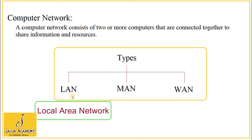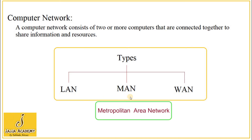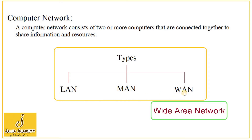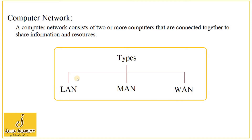LAN stands for Local Area Network, MAN stands for Metropolitan Area Network, and WAN stands for Wide Area Network. The types of networks are based on the area that is covered by a network.